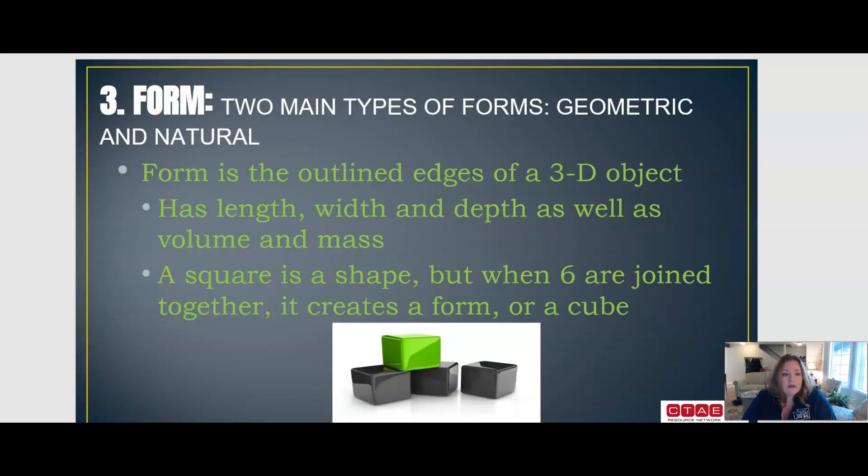Third, we have form. Form is the outline edges of a 3D object with length, width, depth, as well as volume and mass. A square is a shape, but when six are joined together, it creates a cube, which is a form.